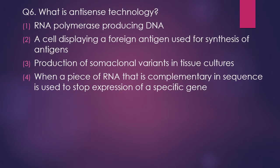Question 6. What is antisense technology? Options: RNA polymerase producing DNA, a cell displaying foreign antigen used for synthesis of antigen, production of soma clones and variants in tissue culture, or when a piece of RNA complementary in sequence is used to stop expression of a specific gene. The correct answer is option 4. A piece of RNA complementary to a given sequence is used to stop the expression of a particular gene — this is known as antisense technology.